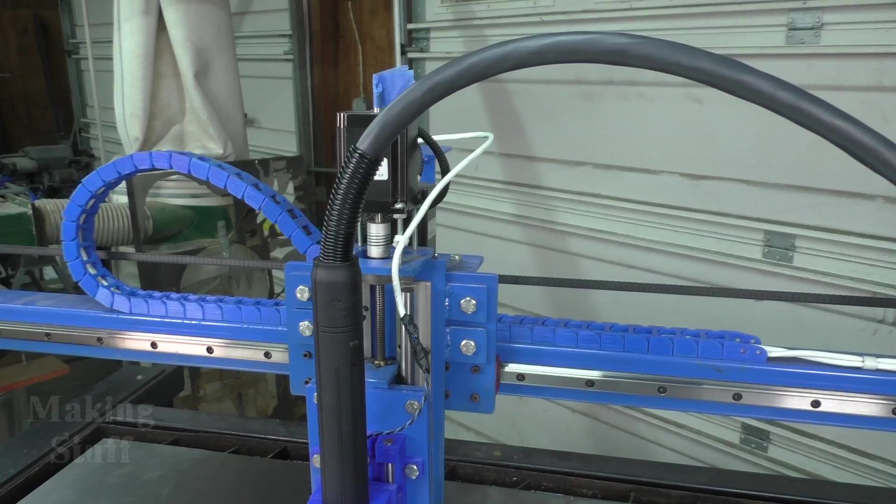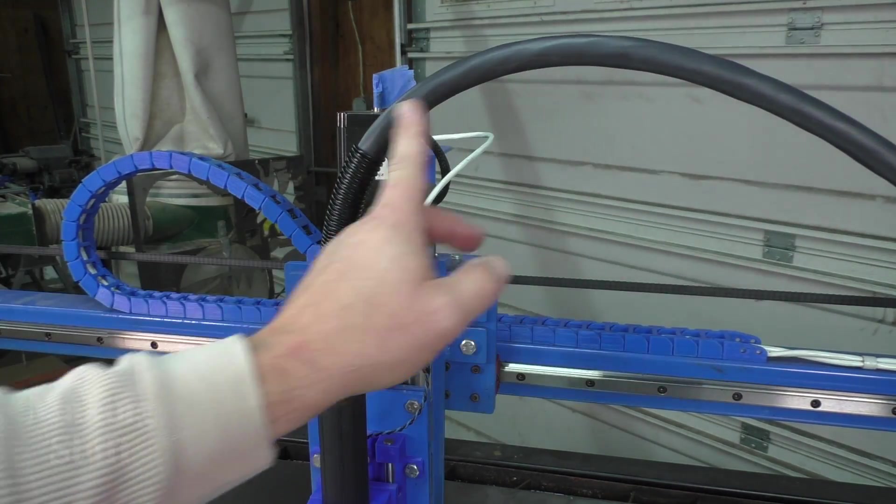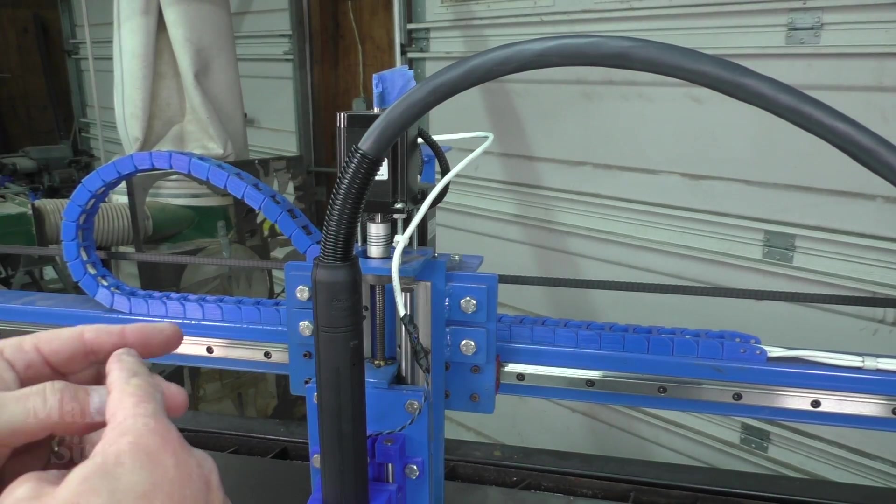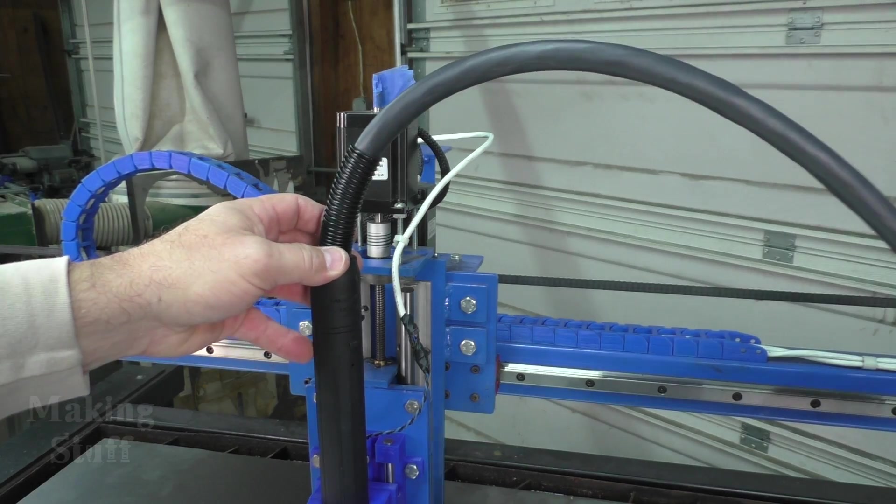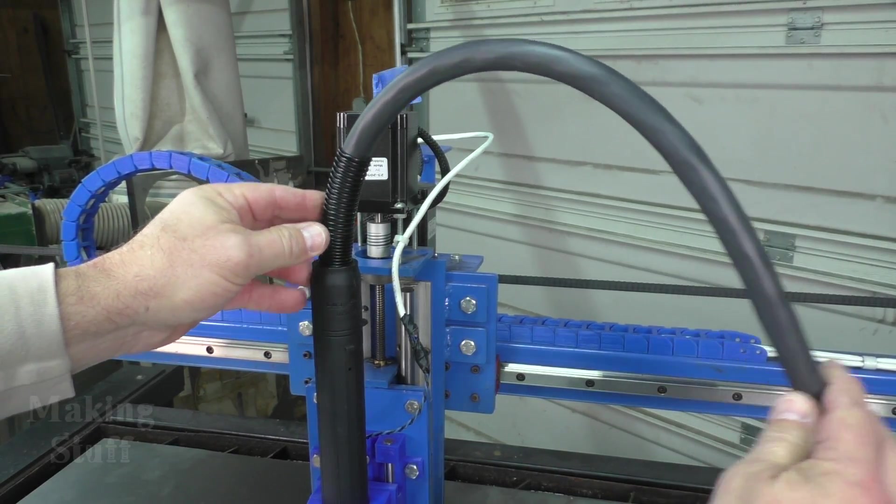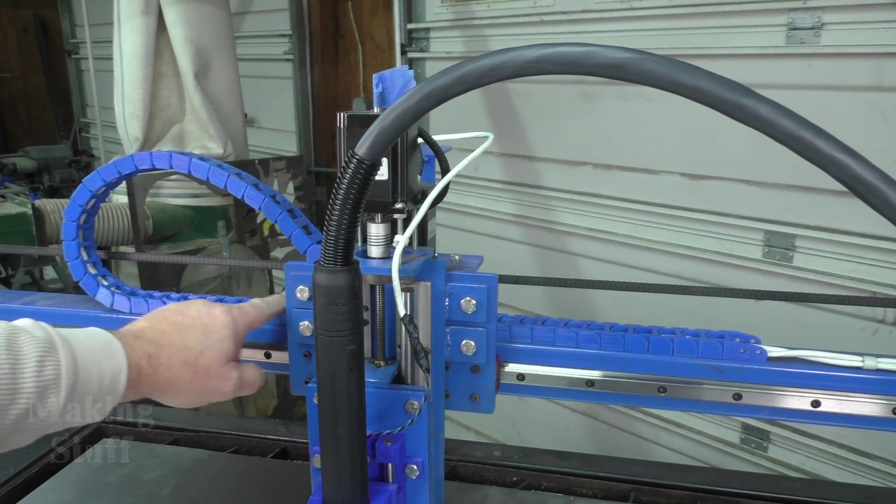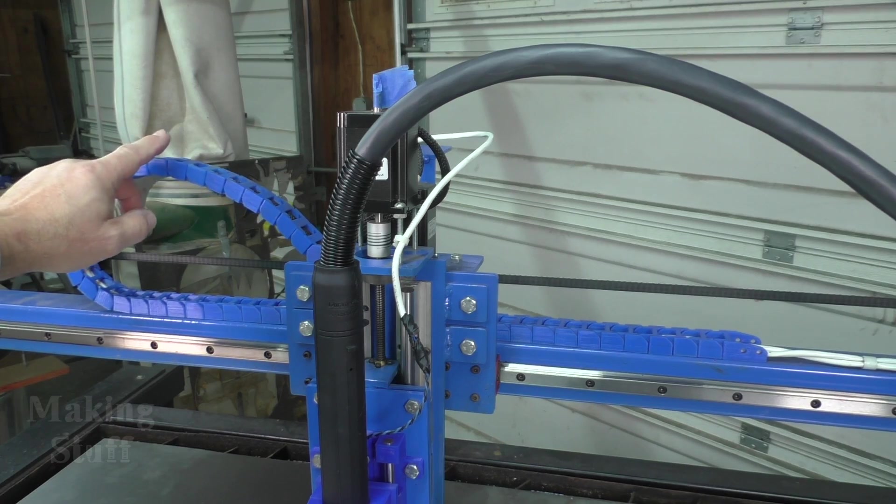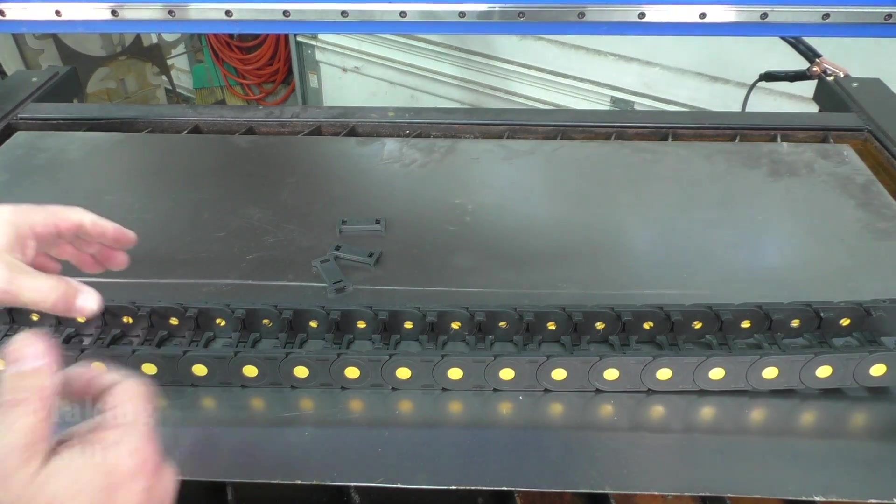Now along with the machine torch came another problem, and that was this thick cable here. The old torch had a much softer and pliable cable. This one is much more rigid and it's hard to bend at a tight radius. So I could not zip tie it to the 3D printed cable chain like I did with the old Harbor Freight torch.